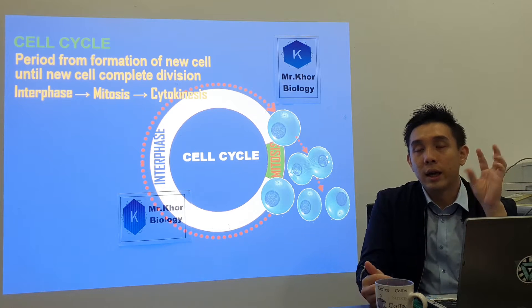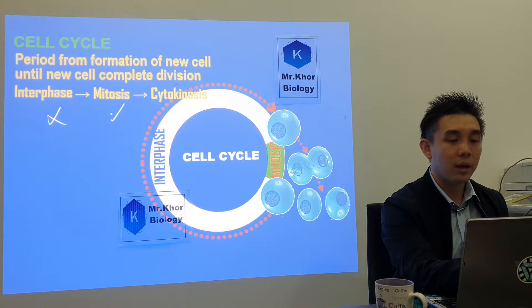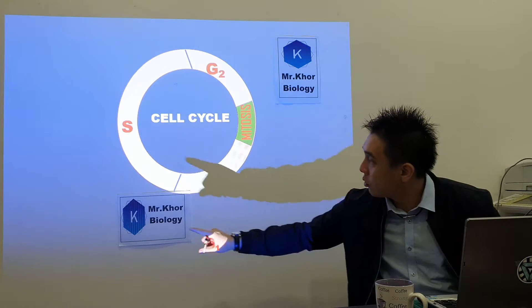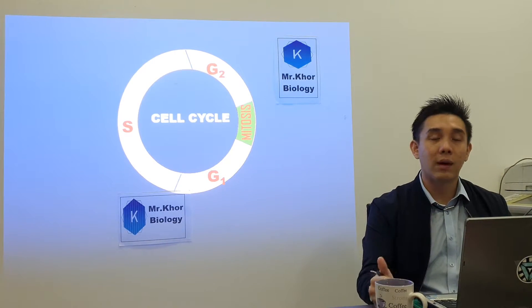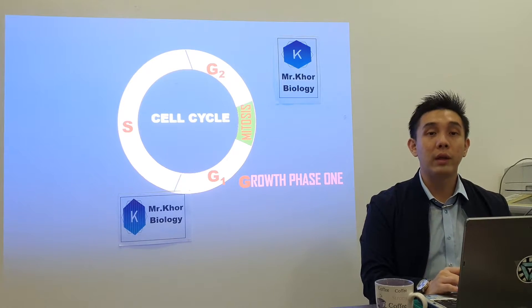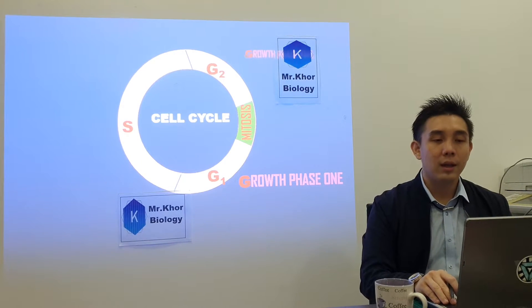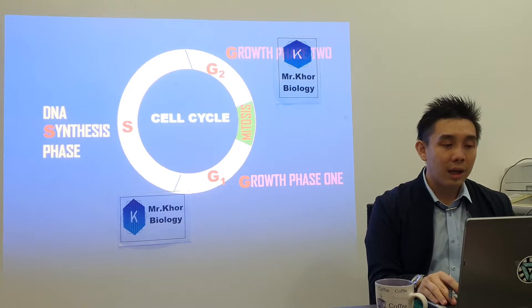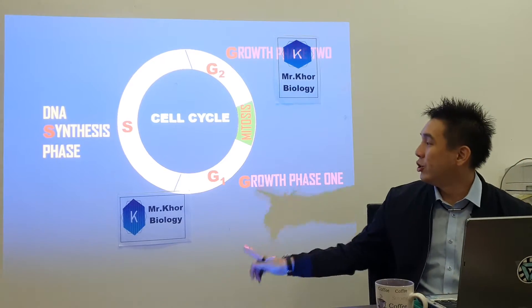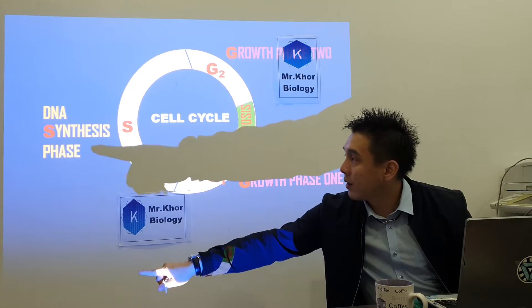Within interphase, there are three phases. The first phase is G1, which stands for Growth Phase 1. The second is S-phase, the DNA Synthesis Phase. The third is G2. So the three phases are G1, S, and G2 — and you must know all the names, including 'Fasa Sintesis DNA'.